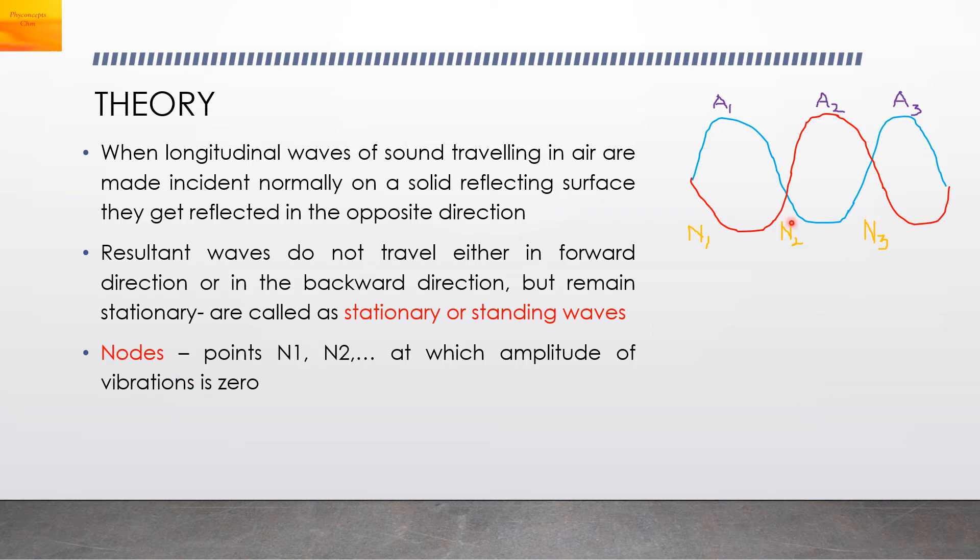There are the nodes which are denoted as N1, N2, N3, where the amplitude becomes zero. Then there are the anti-nodes A1, A2, A3 at which the amplitude of the vibration becomes maximum.